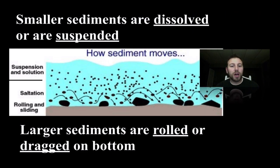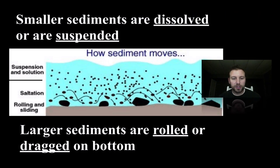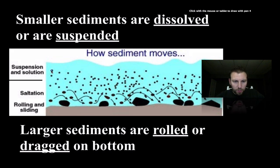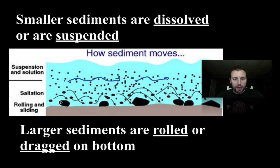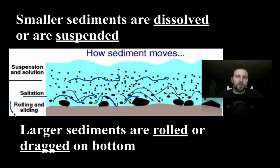Smaller sediments are dissolved or in suspension, as we can see in this diagram — all these small particles are just making their way through the water stream. The bigger particles, notice, are kind of bouncing along the bottom getting hit into it. That is known as saltation — the rolling or sliding along the bottom.